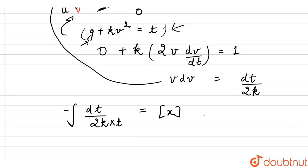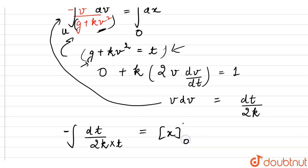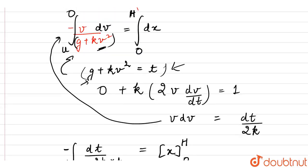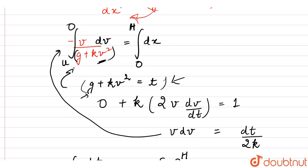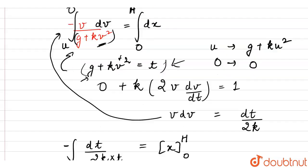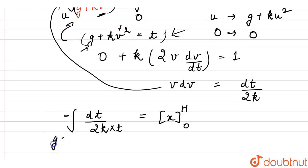Let's put the limits here. The lower limit was 0 and the upper limit is maximum height which is denoted with capital H. Let's change the units. When the velocity was u initially, what is the value of t? t would be g plus k u squared and the upper limit is 0, when the velocity is 0.